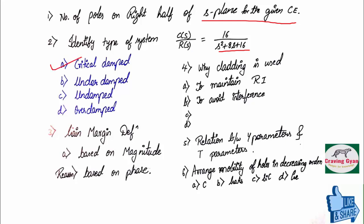Third question was based on assertion and reasoning. They have given the gain margin definition. First assertion was based on magnitude definition and the second one was based on phase. Reason is not the correct explanation for assertion but both statements are correct hence the answer is B.